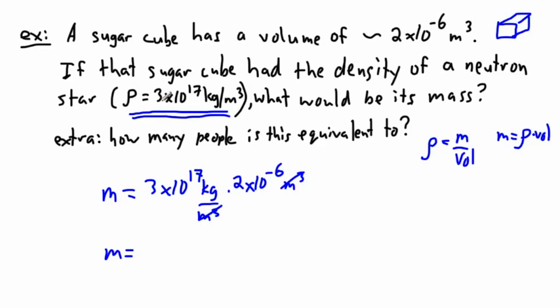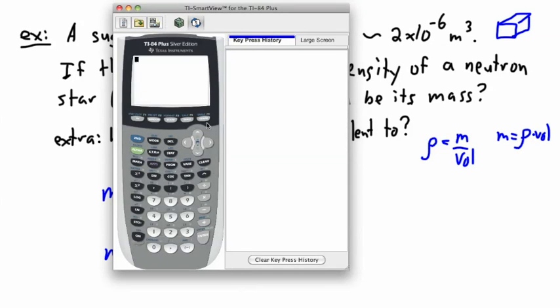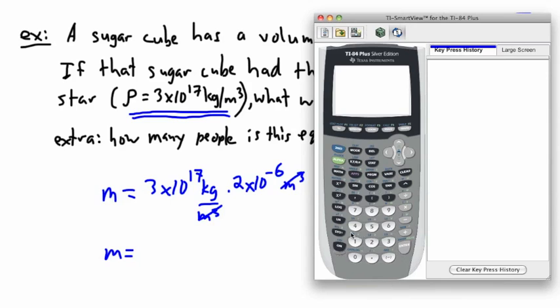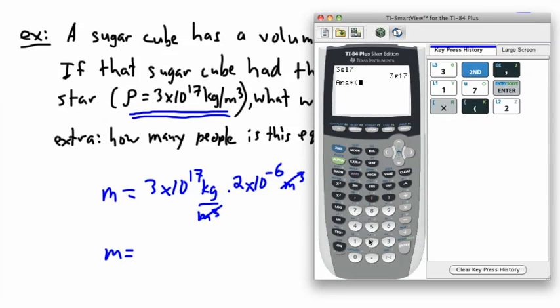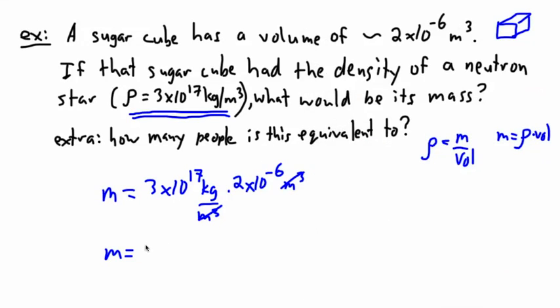The reason we're doing this is to look at how many people could be squished into a sugar cube if it was a neutron star. It first helps to find the mass. So I'm going to get out my calculator and multiply these two numbers. 3 times 10 to the power of 17 times 2 times 10 to the minus 6. I get 6 times 10 to the 11 kilograms.